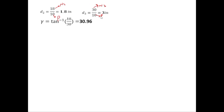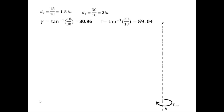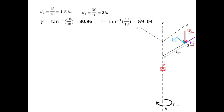With d2 = 1.8 in, d3 = 3 in, γ = 30.96°, and Γ = 59.04°, we set up the coordinate system for shaft B. The y-axis is the shaft axis, and point G is where the force is exerted on gear 3 at the average radius. The radial force is along the radius, the tangential force Wt is as shown, and the thrust load Wa acts in the negative y-direction because bearing D takes the thrust load.